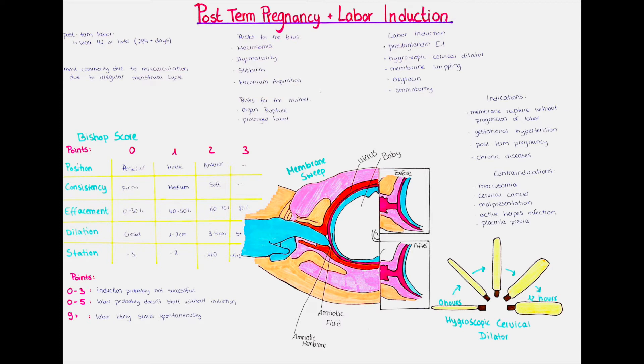Another risk is fetal dysmaturity, also called post-maturity syndrome. This means that some babies will stop gaining weight after the due date, which is usually calculated to be at 40 weeks gestation. A stop of weight gain is usually associated with a decrease of blood delivery to the fetus via the placenta, leading to malnourishment. The babies usually present with arms and legs that seem skinnier and longer than normal, and the skin looks dry and sometimes starts to peel off. Also, the hair and the finger and toenails are often longer than usual in term babies.